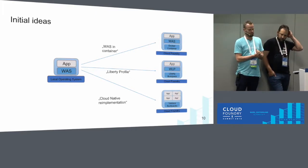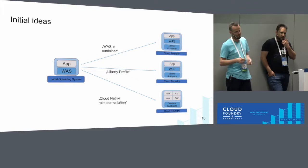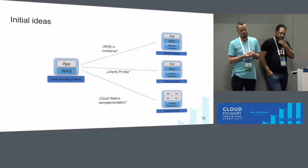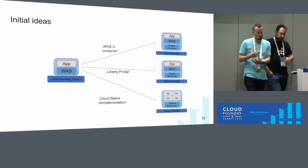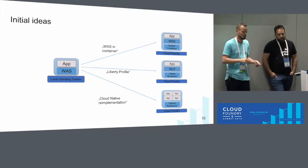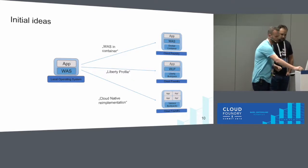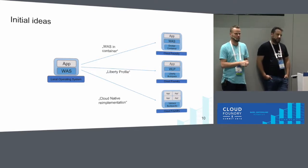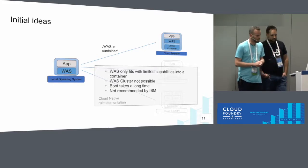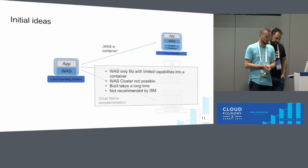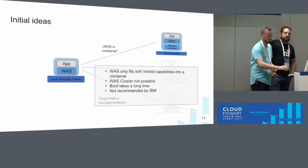There were three options. We knew from local development that it's technically possible to run the full WebSphere application server in a Docker container — but we ruled that out quickly; even IBM didn't recommend it since it takes a long time to boot and doesn't support a WebSphere cluster. The second option was Liberty Profile. The third would have been to completely rewrite the application from scratch in a clean, cloud-native way with domain-driven design and microservices. We got support from both IBM and Pivotal — Pivotal on the Cloud Foundry side, IBM on the Liberty part.